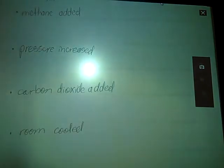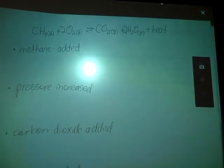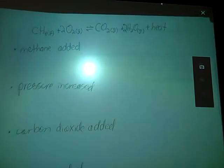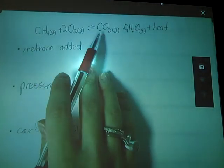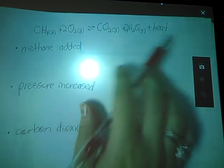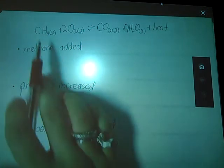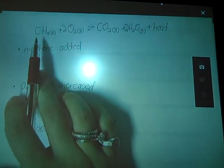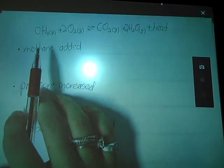So let's look at an example that combines all of these different possibilities of changes that we can make. This is a combustion reaction reacting methane with oxygen gas to produce carbon dioxide and water, and this is an exothermic reaction. So there's heat as my product. First possibility, we add methane. Here's methane. Over on the left-hand side, it is a reactant.